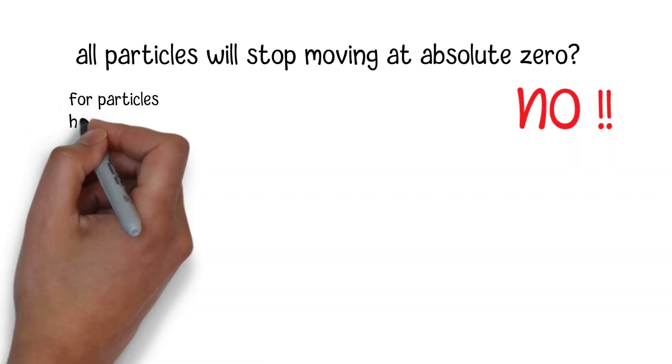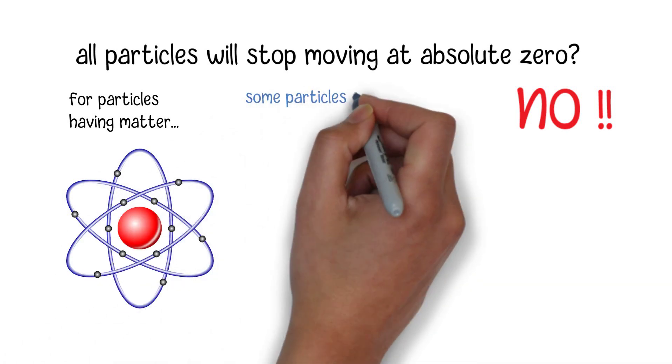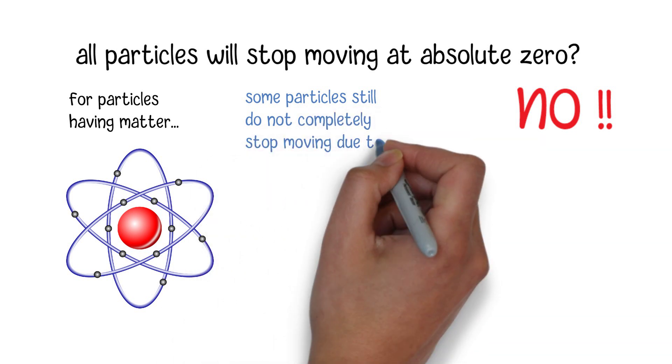For particles having matter, such as electrons, atoms, or molecules, according to quantum mechanics, even at absolute zero, some particles still do not completely stop moving due to the uncertainty principle.